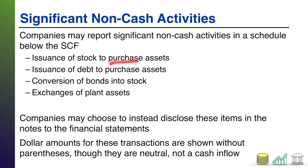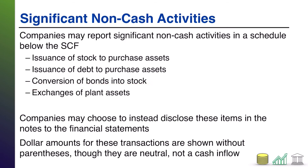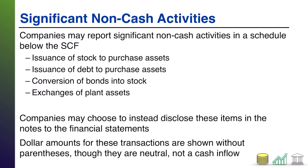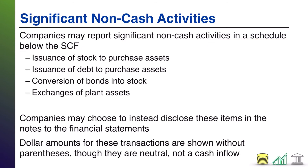Here are some examples. What if you buy an asset, but instead of cash you issue stock? Or you buy an asset, but instead of cash you issue debt? Or what if you convert some existing debt into stock, because that could look like the debt got paid off, but you didn't really pay it off. Or what if you simply exchanged one asset for another — say, a piece of equipment for another piece of equipment — where cash isn't involved. In these events, you have to tell investors about them so they can see that these big things didn't involve cash. Companies will often put these in a schedule right beneath the statement of cash flows, or alternatively, they have the option to simply create a note in the financial statements. Either way is acceptable.